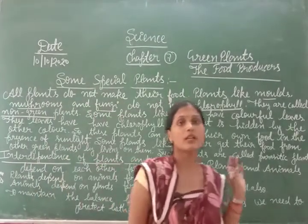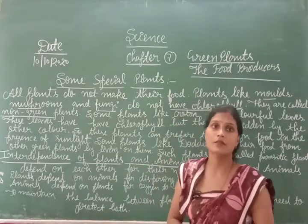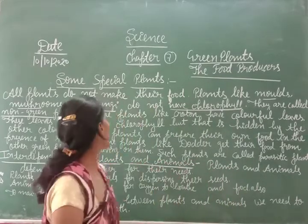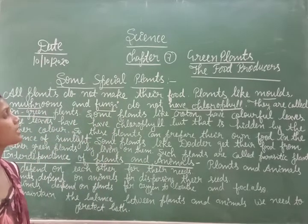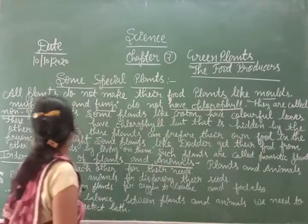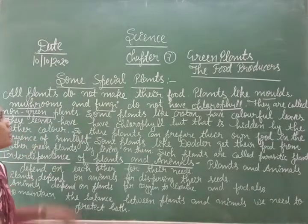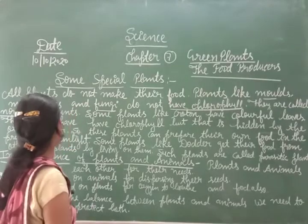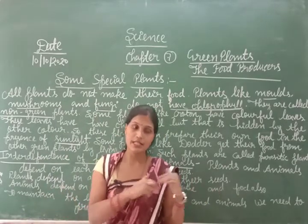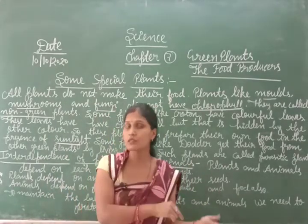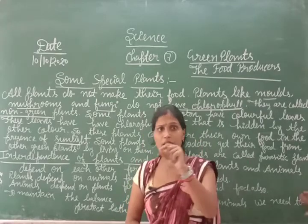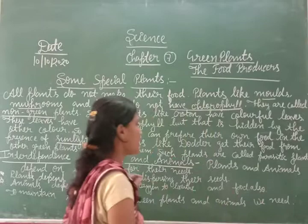You know, the pigment chlorophyll is what makes leaves green. Some plants have colorful leaves with other colors. These colorful plants can still participate in the process of photosynthesis because there is a little amount of chlorophyll contained in them. So these plants do participate in this process.